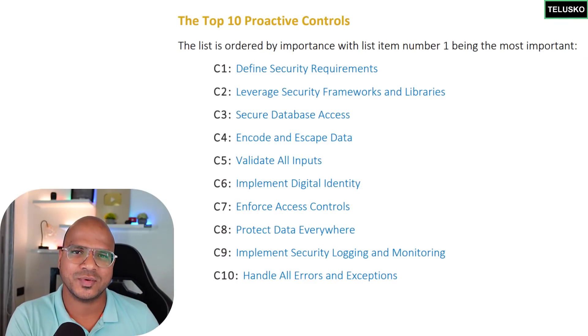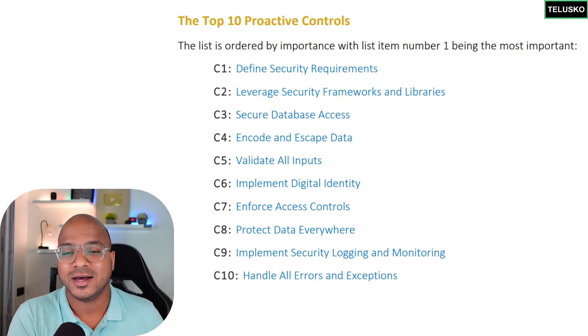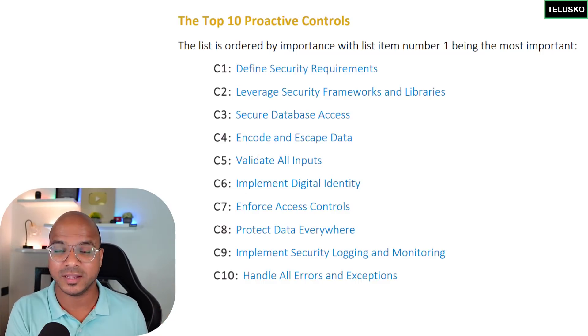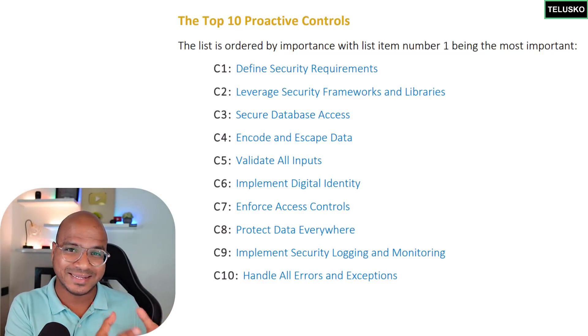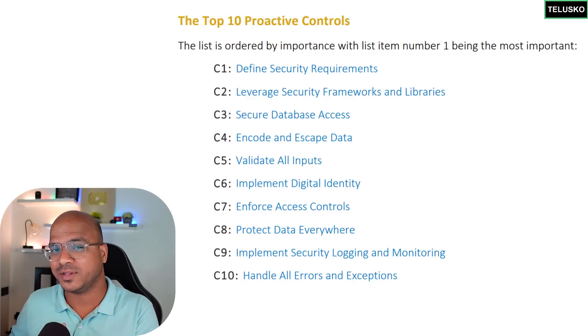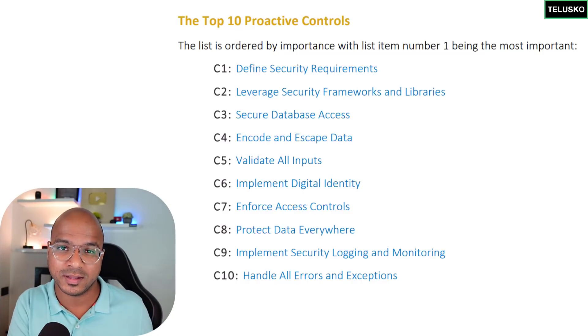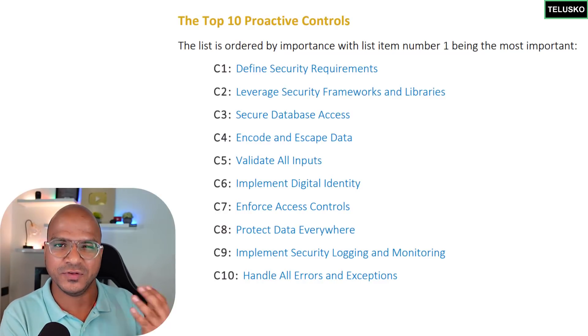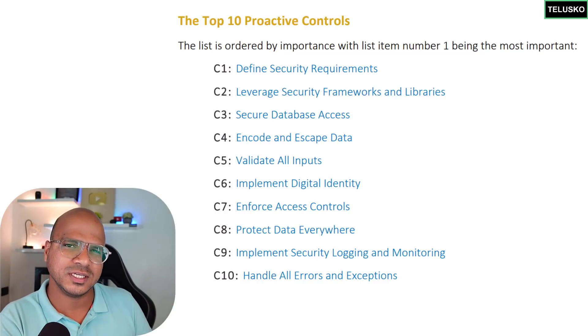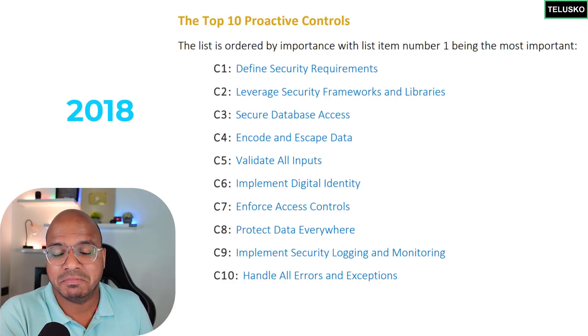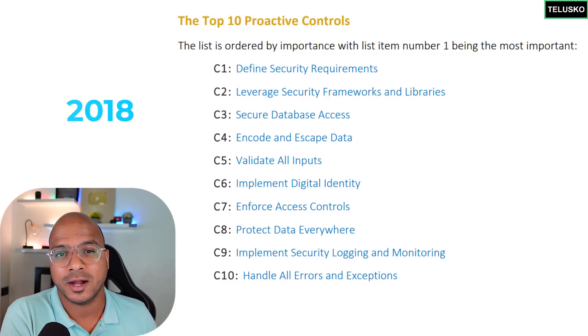There are Top 10 proactive controls as mentioned, and you can see the list on the screen. We have 'Define Security Requirements,' 'Leverage Security Frameworks and Libraries,' and more — 10 important points. These are not the only ones to focus on; there are other parameters as well. The current list is from 2018, so in one or two years there may be new proactive controls. Let's have an overview of all these points.